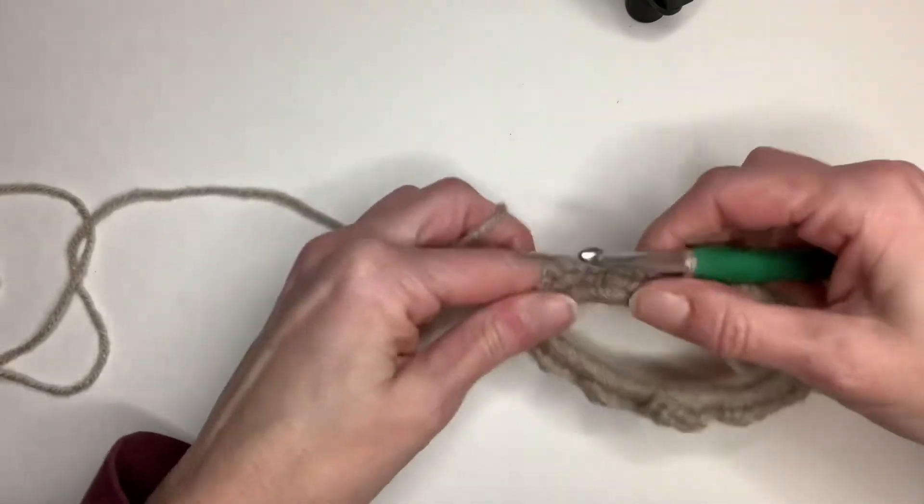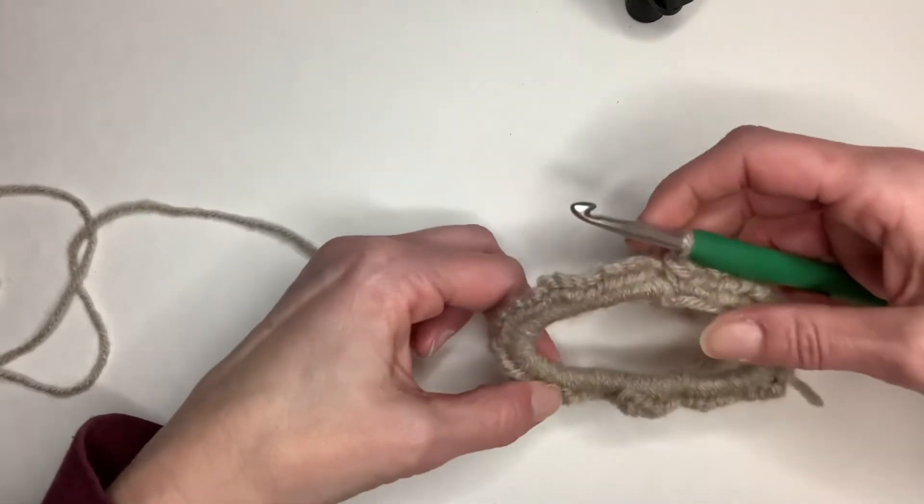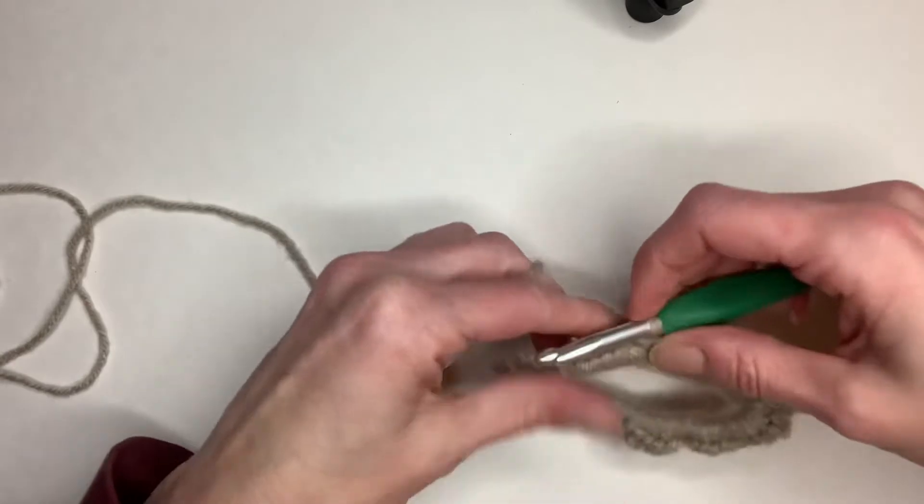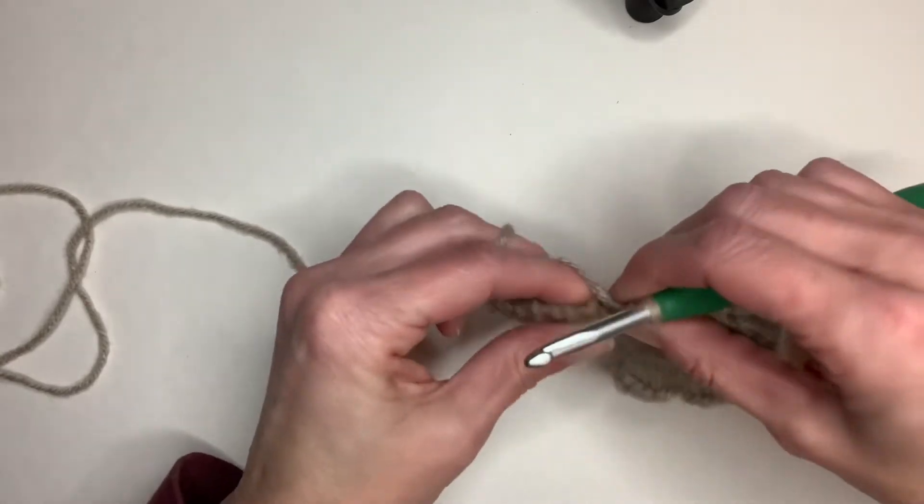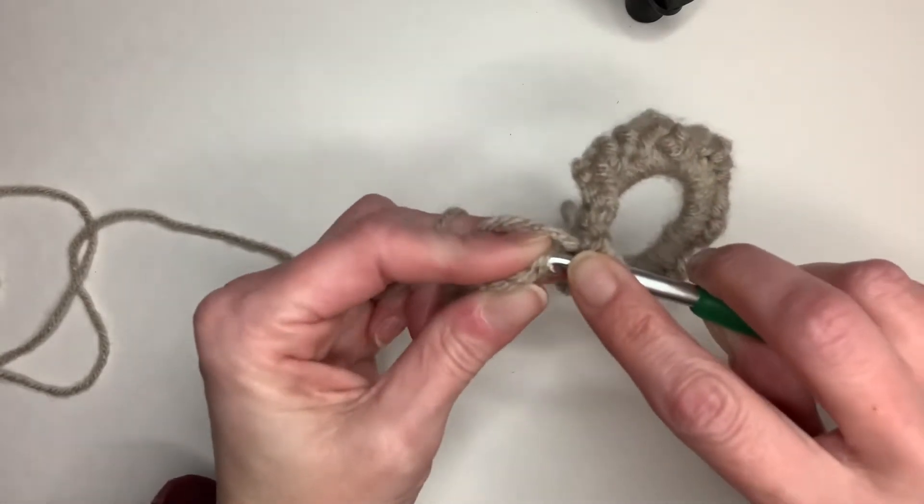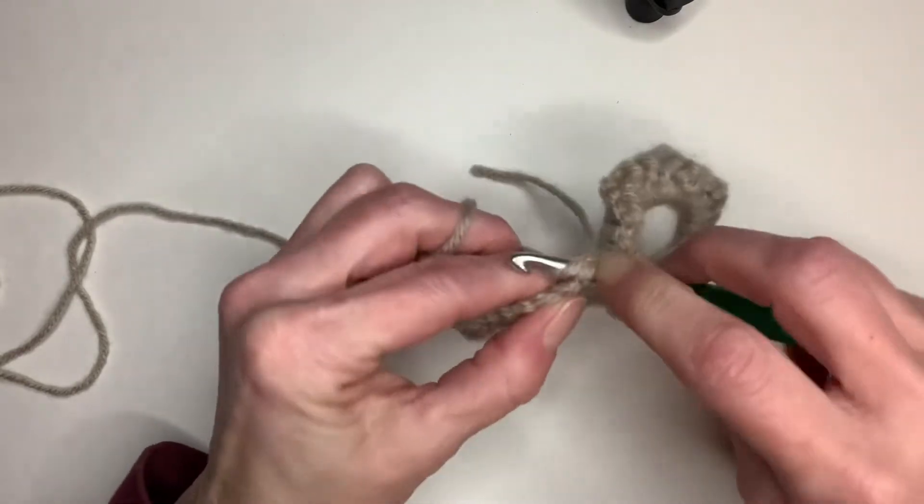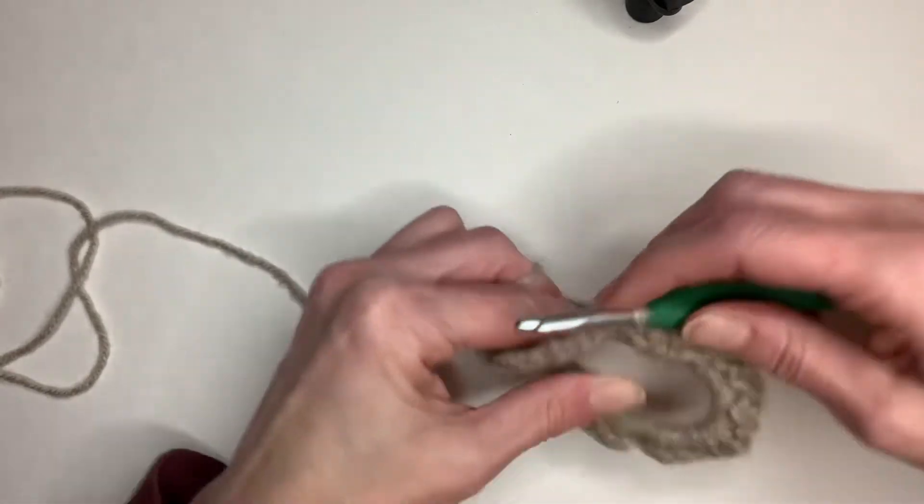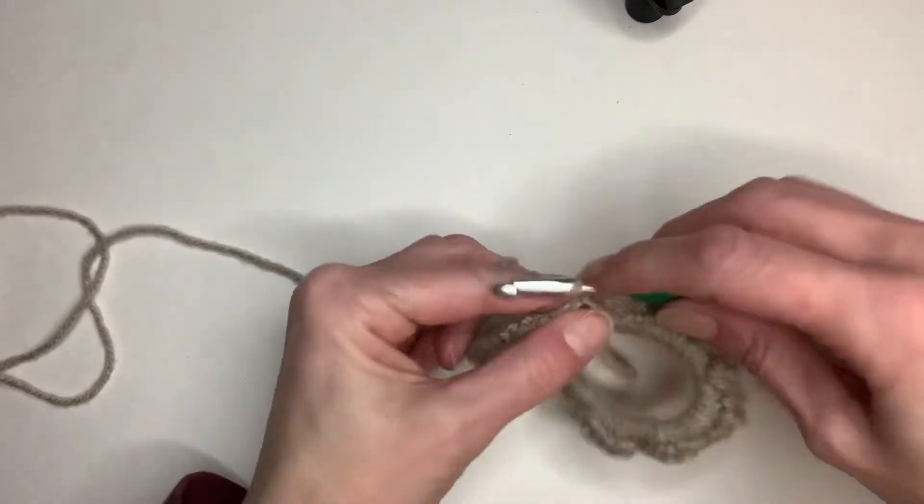Because we're going to put three double crochet in each of these. So it's going to get really tight. So what you're going to do is you're going to slip stitch right to the beginning here, like so. And then you're going to chain two.